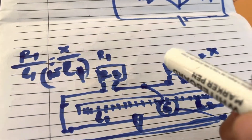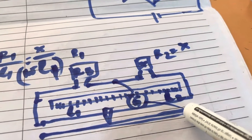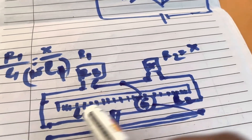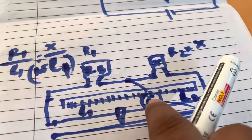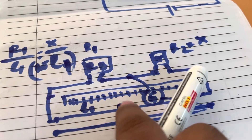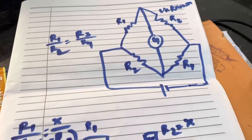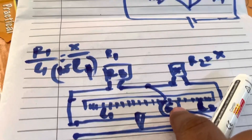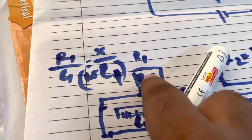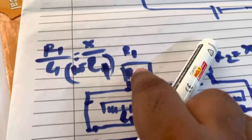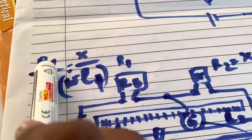In the meter bridge, four resistors are present: R1 and R2 in the gaps, and the unknown resistance on the right. A galvanometer is connected from the midpoint to a jockey, which slides along the conducting wire. The scale is 100 centimeters. We place the jockey at different positions and use a resistance box — say 1000 or 5000 ohms — as R1.